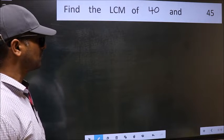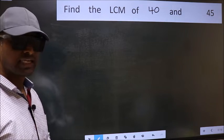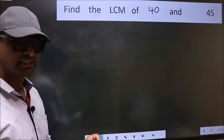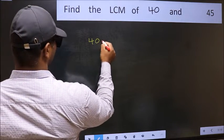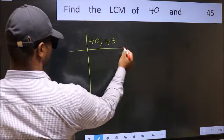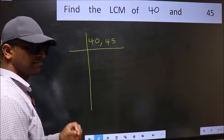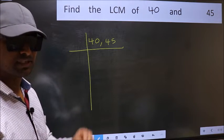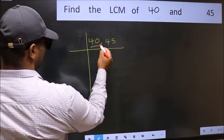Find the LCM of 40 and 45. To find the LCM, we should frame it in this way: 40 and 45. This is step 1. Now you should focus on the first number, which is 40 here.